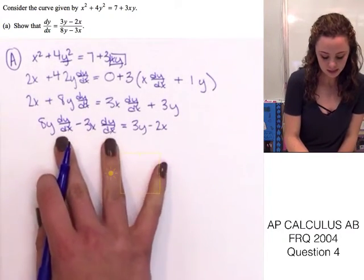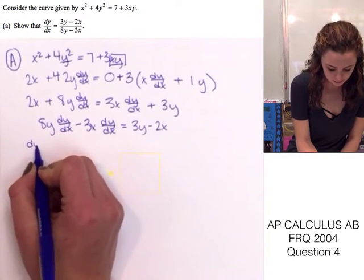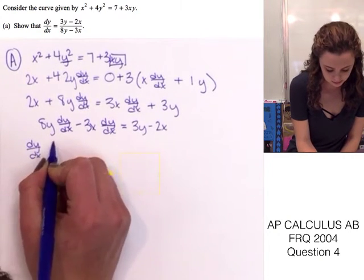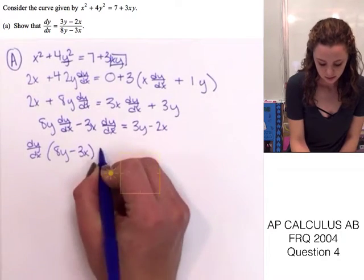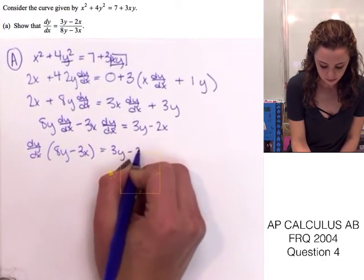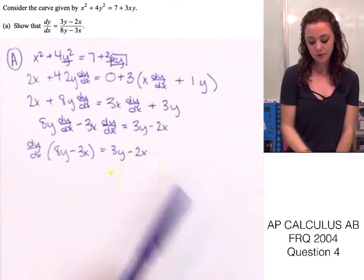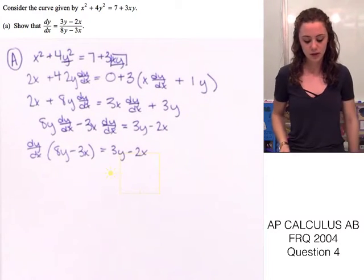We have dy dx times 8y minus 3x. It's equal to 3y minus 2x. So, if we divide both sides by 8y minus 3x, then we'll have solved for dy over dx.